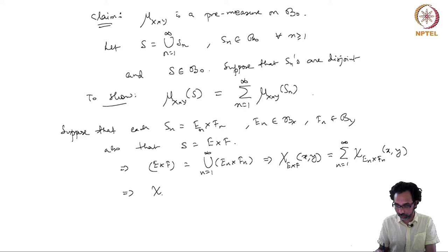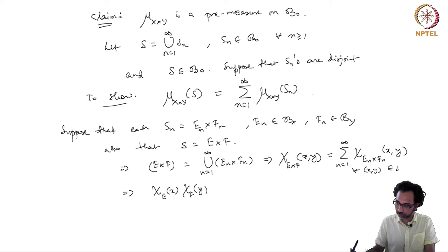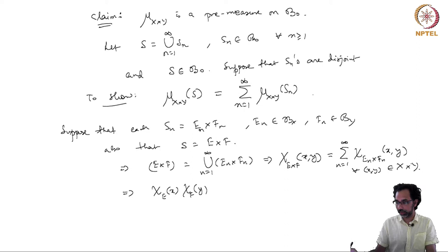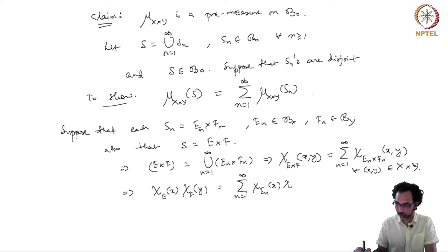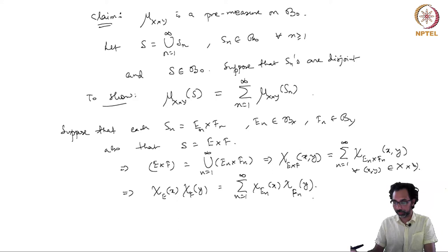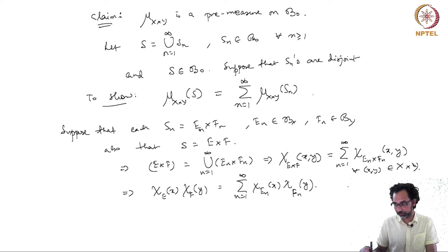Since we have a Cartesian product, χ_{E×F} is nothing but χ_E(x)·χ_F(y), and this holds for all (x,y) in X × Y. We can rewrite this as χ_E(x)·χ_F(y) equals the sum n equal to 1 to infinity of χ_{E_n}(x)·χ_{F_n}(y). Note that all these χ_E, χ_F, χ_{E_n}, χ_{F_n} are measurable functions with respect to their respective sigma algebras.